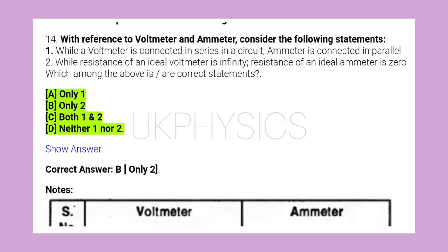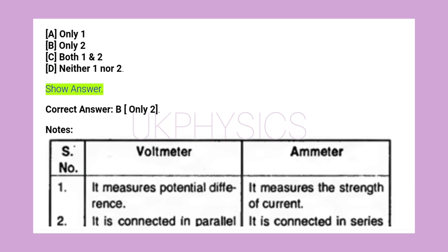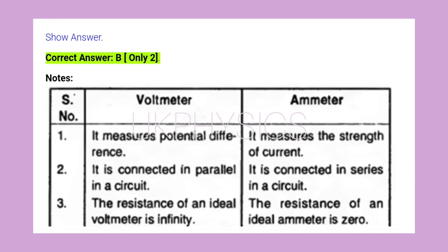A. Only one, B. Only two, C. Both one and two, D. Neither one nor two. Correct answer B. Only two.